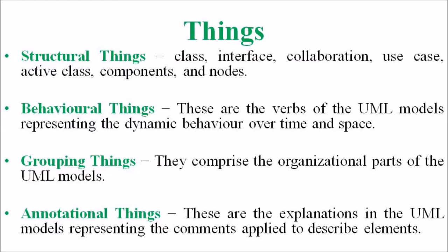There are four kinds of things in UML: structural things, behavioral things, grouping things and annotational things. The structural things are the nouns of the UML model, representing the static elements that may be either physical or conceptual. The structural things include class, interface, collaboration, use case, active class, components and nodes.